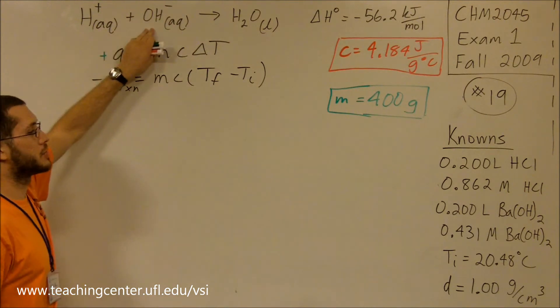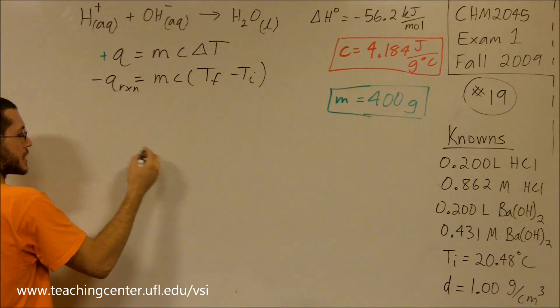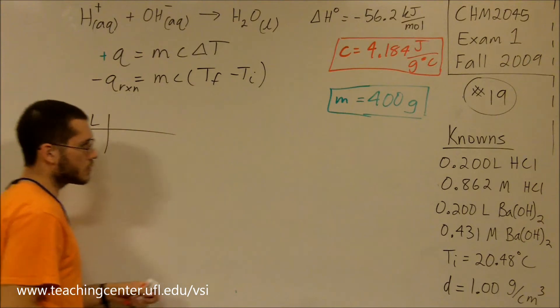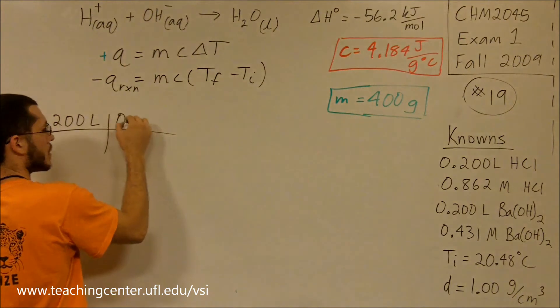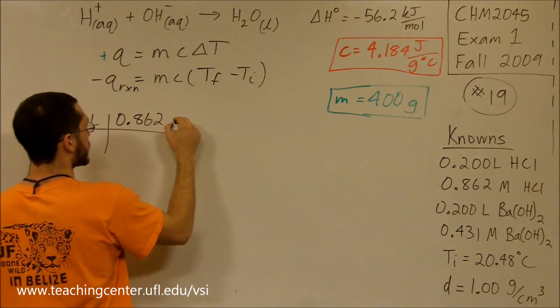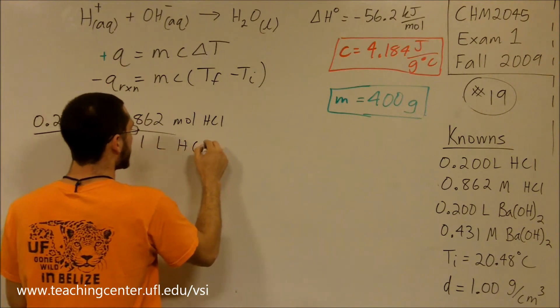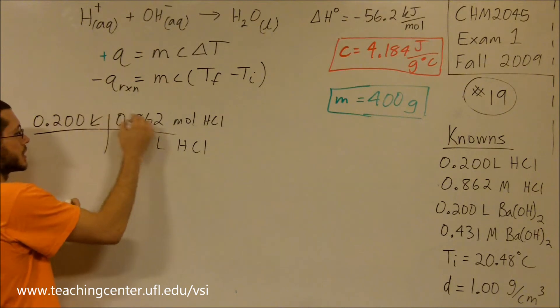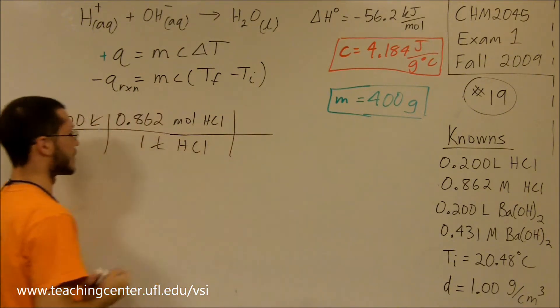How much H⁺ or OH⁻ do we have? Let's figure out how much H⁺ we have. We have 0.200 liters of HCl at this concentration. If I multiply them together, it's 2 moles of HCl per one liter. This is what's meant by the molarity. If I multiply molarity times volume, liters cancel, I'm left with moles of HCl.